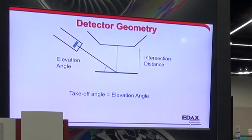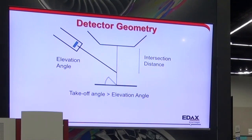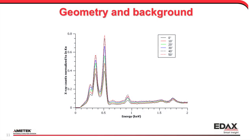If we have our sample located at the intersection distance, the takeoff angle will be equal to the elevation angle — in this case 35 degrees. If I tilt my sample, my takeoff angle becomes larger than my elevation angle. Similarly, if I start to move the sample down, my takeoff angle increases as well. So tilting the sample or moving the sample down both increase the effective takeoff angle.